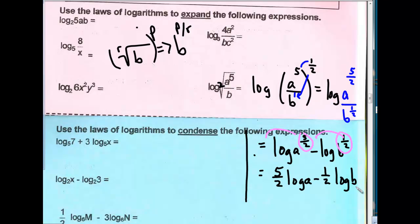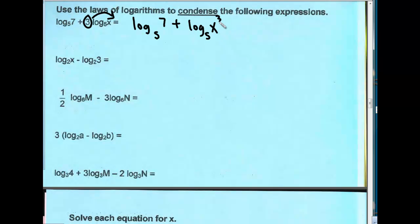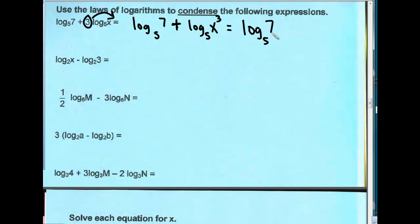Now that we've expanded some logarithmic expressions, let's condense some. We're just going backwards. The first thing I want to handle is the coefficient — the 3 moves back as an exponent. So this is log base 5 of 7 plus log base 5 of x to the third power. Now I need to condense because with addition, I go backwards on the property and change it to multiplication: log base 5 of 7x cubed.